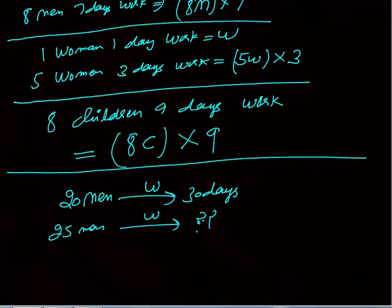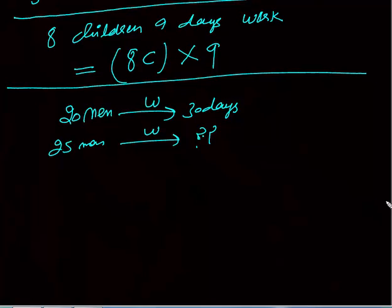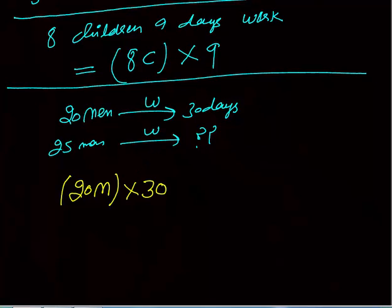These kinds of questions can be simply solved with just one equation. Twenty men one day work — we know one man one day work is m, so twenty men one day work is twenty m. In thirty days they will do twenty m into thirty units of work — this equals total work done. Now, twenty-five men one day work is twenty-five m.